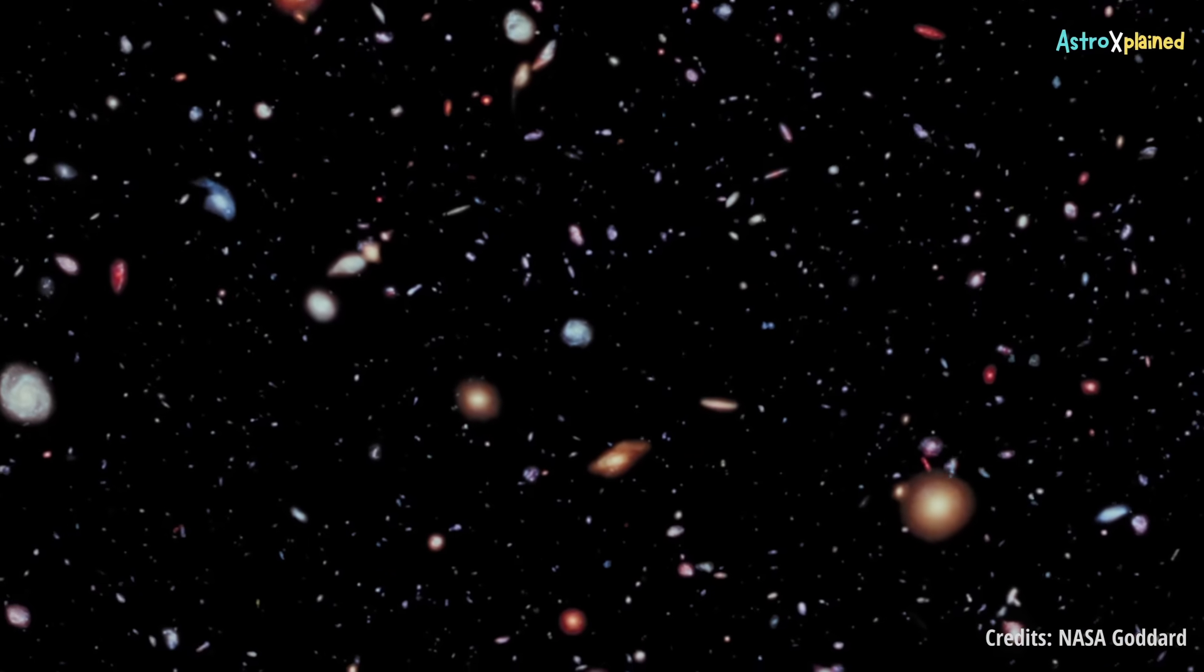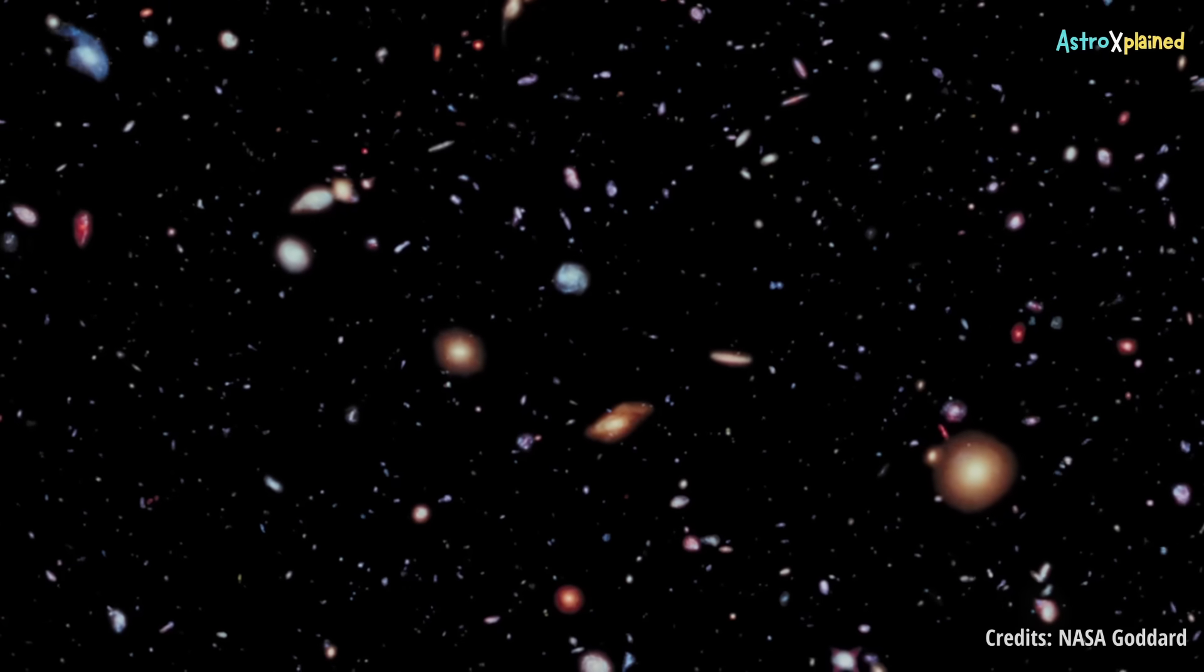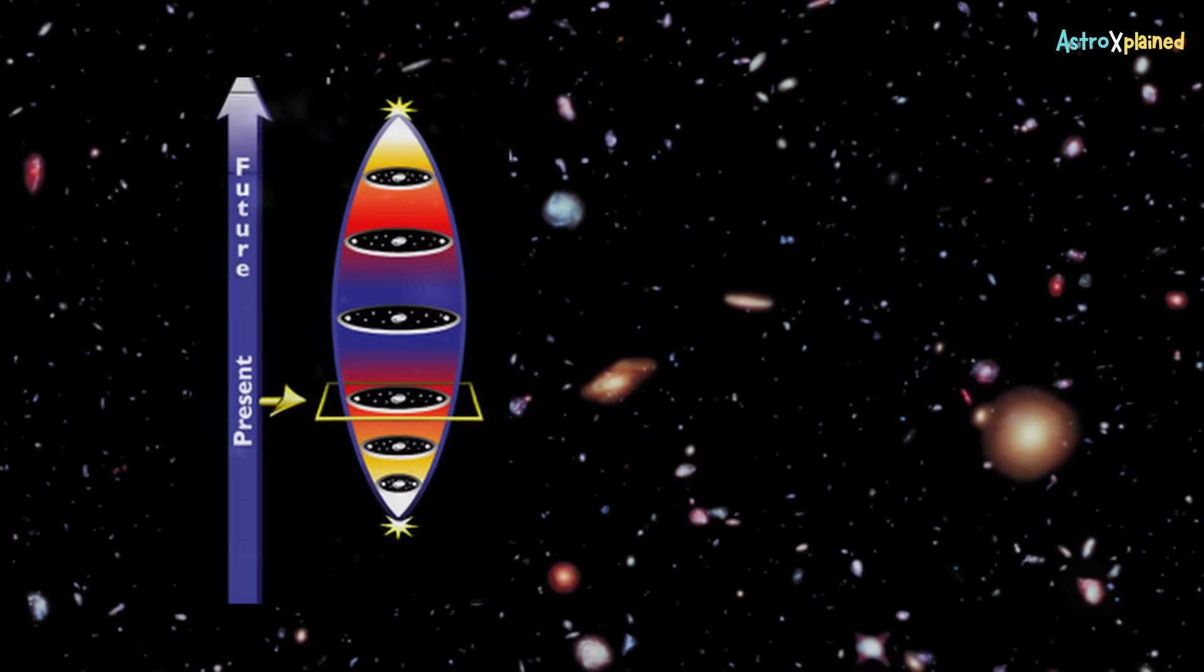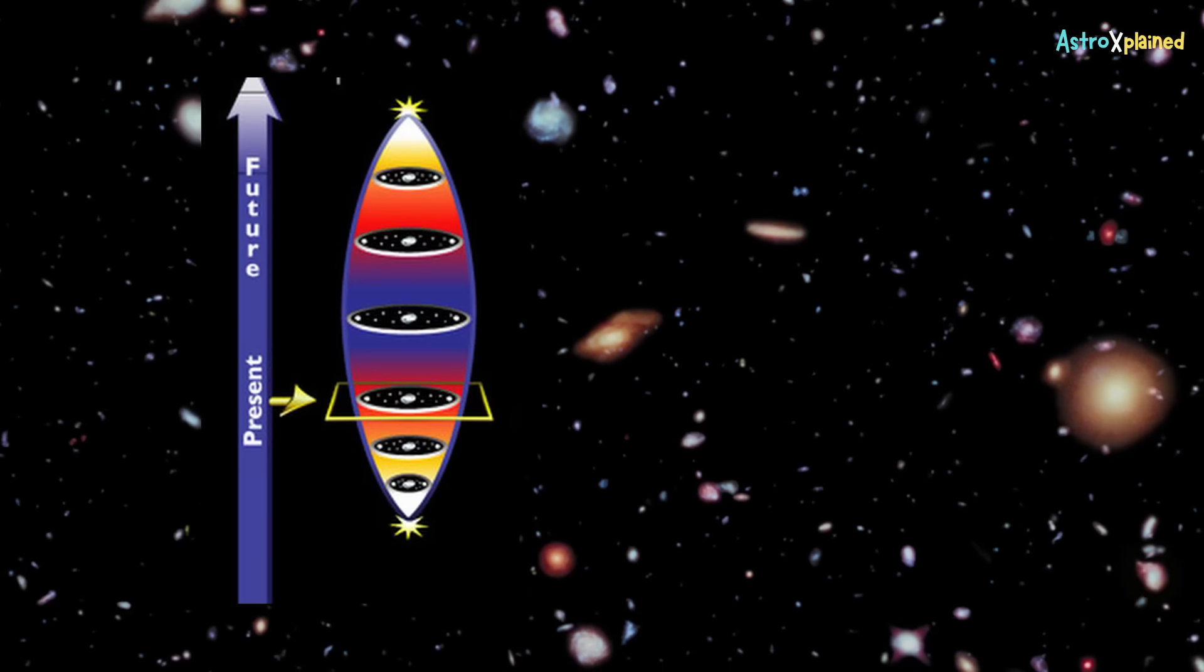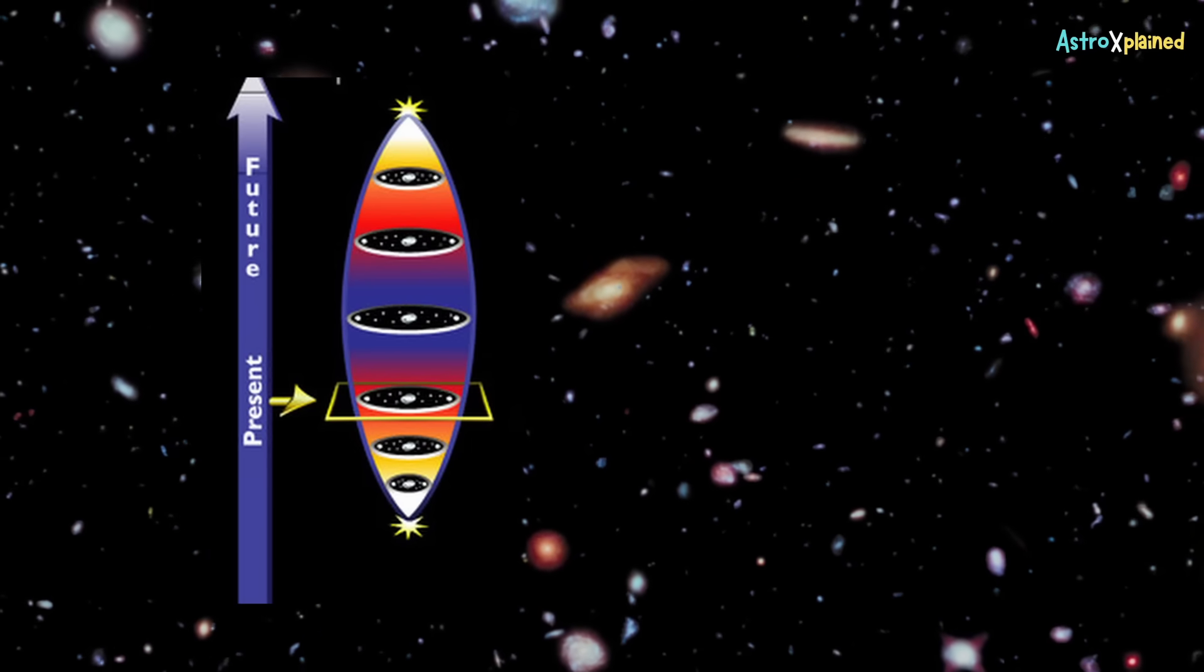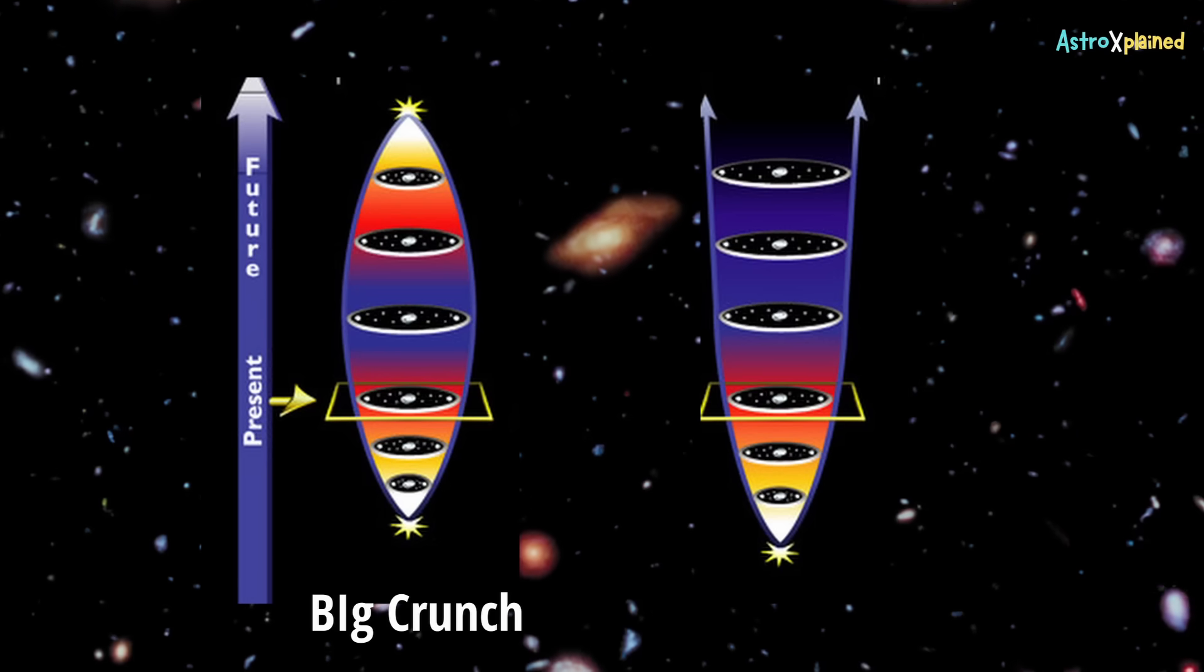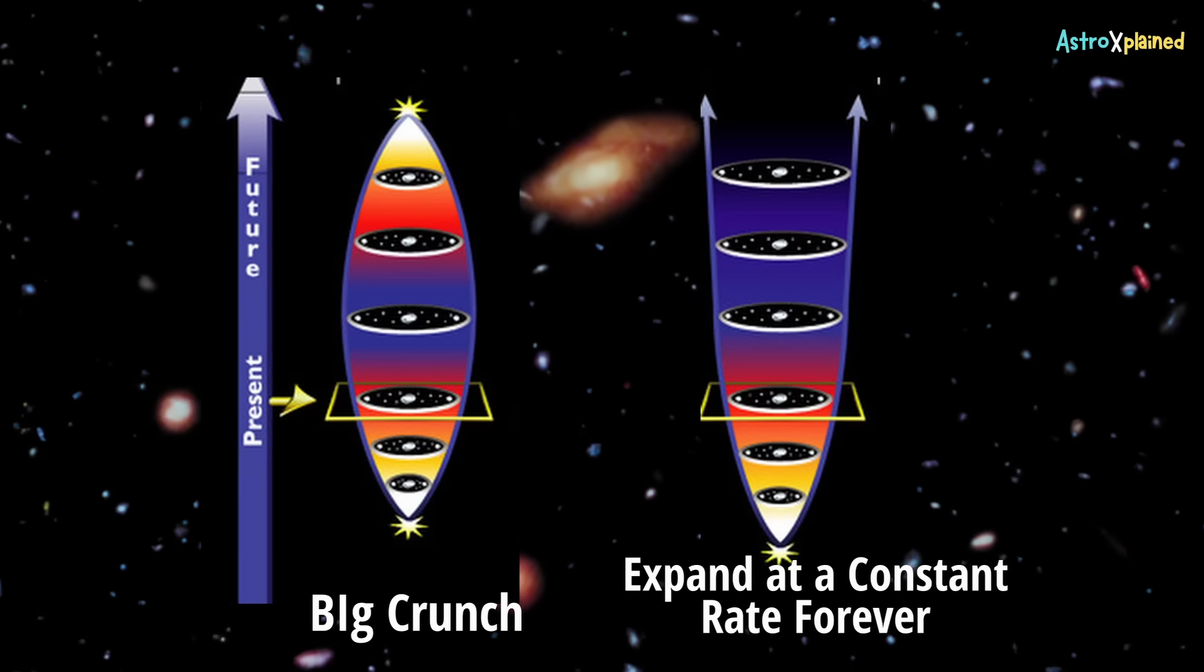At the time, there were two main competing theories about the universe's fate. Either it had enough mass for gravity to eventually halt the expansion and cause a big crunch, or it was too light, meaning it would expand forever at a constant rate.